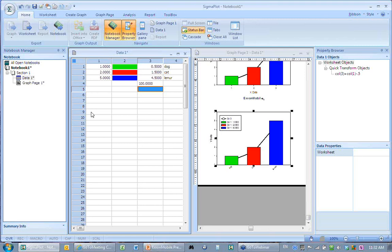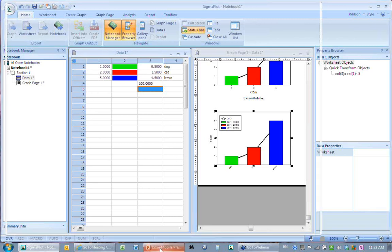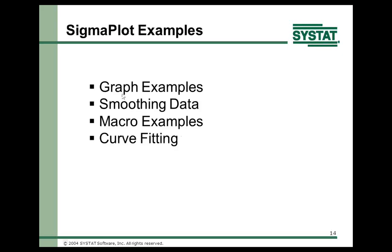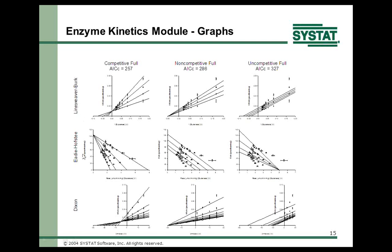Let's go back to PowerPoint to show some graph examples, smoothing examples, macro examples, and curve fitting. You may or may not use enzyme kinetics, but I show it because these graphs — Lineweaver-Burk, Eadie-Hofstee, Dixon — are very complicated to do by hand because they involve ratios of variables along both axes. A macro can create all these graphs for you to save an amazing amount of time.